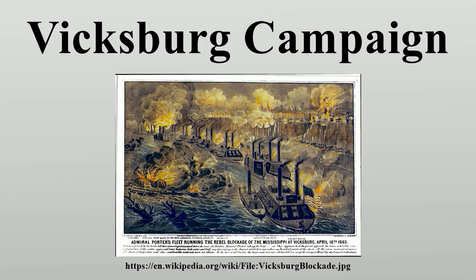Grant's army marched south down the Mississippi Central Railroad, making a forward base at Holly Springs. He planned a two-pronged assault in the direction of Vicksburg. His principal subordinate, Maj. Gen. William T. Sherman, was to advance down the river with four divisions, and Grant would continue with the remaining forces down the railroad line to Oxford, hoping to lure the Confederate army out of the city to attack him in the vicinity of Granada, Mississippi.